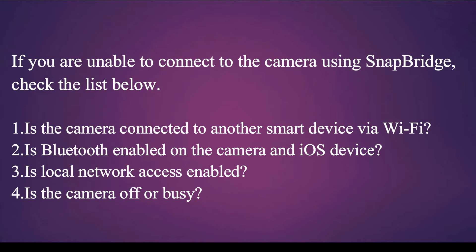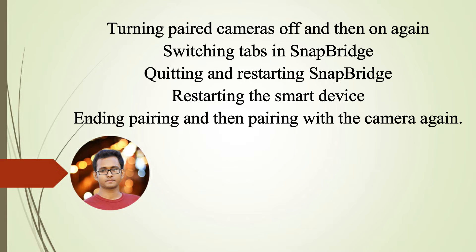If you are unable to connect to the camera using Snapbridge, check the list below: Is the camera connected to another smart device via Wi-Fi? Is Bluetooth enabled on the camera and iOS device? Is local network access enabled? Is the camera off or busy? Try turning paired cameras off and then on again, switching tabs in Snapbridge, quitting and restarting Snapbridge, or restarting the smart device.